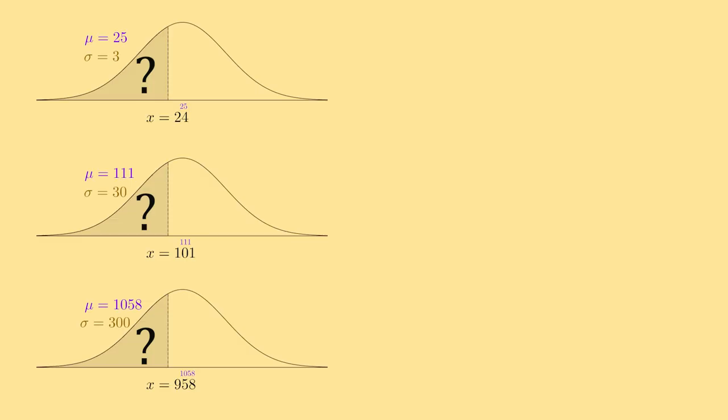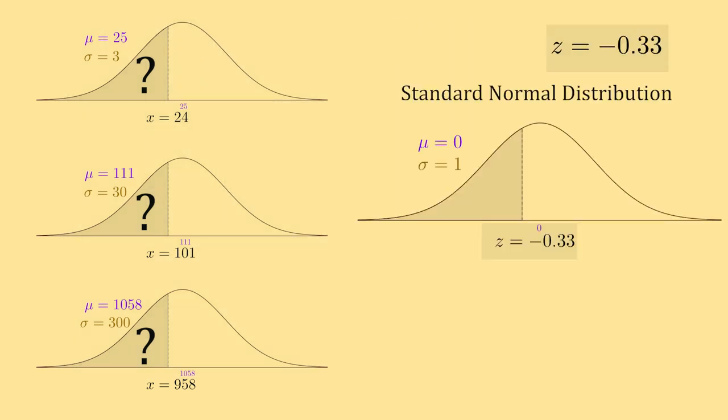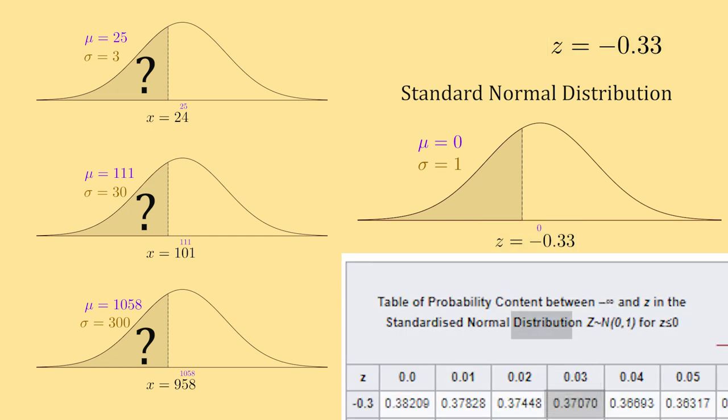In summary, z-scores help us do two things. They allow us to find the percent of the normal curve below or above a number from any normal distribution. It does this by translating it to a point in the standard normal distribution and using a z-table to find our percent.